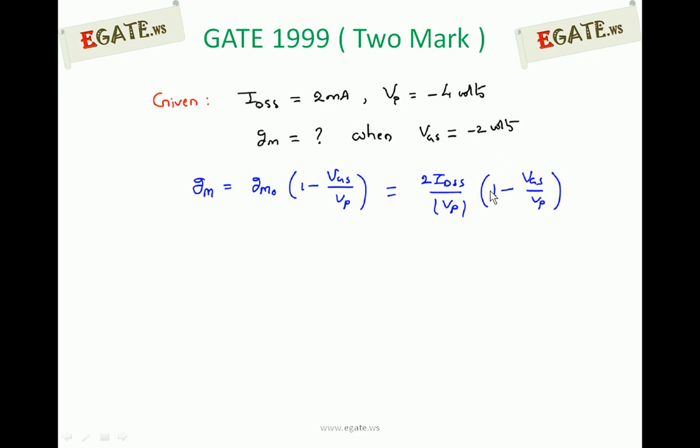Substitute the known values. 2 IDSS is 2, VP is 4 volts. We are going with magnitude. 1 minus VGS given is 2 volts, VP is 4 volts. So it is equal to 1 into 1 by 2 which is nothing but 0.5 millisiemens.